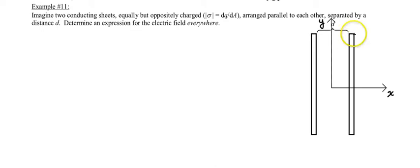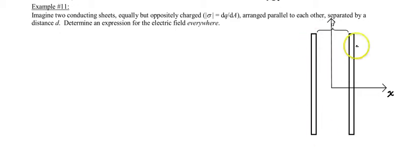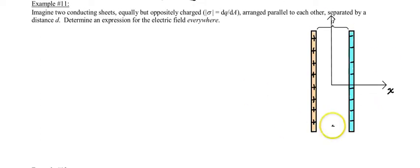We'll assume that these conducting planes are lying along the x-z axes, and we have electric field lines that will be along the x-y plane. First, let's pick a plate to be positive and another plate to be negative and put some charges on them. And there you have the diagram. The electric field due to the two planes can be found by applying the principle of superposition and using the result that we got in the earlier problem, example number 10.